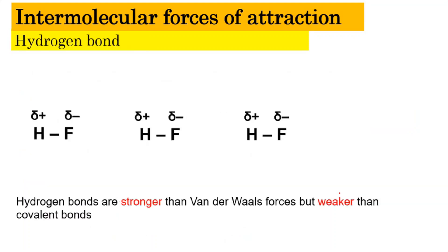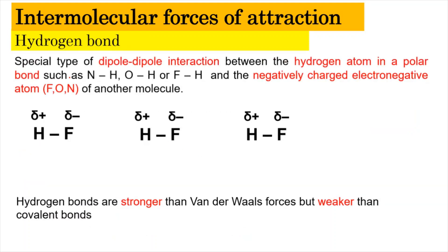Hydrogen bonding is a special type of dipole-dipole interaction that occurs when a hydrogen atom is in a polar bond — for example, N-H, O-H, or F-H. You can remember these atoms as FON: fluorine, oxygen, and nitrogen, which are negatively charged electronegative atoms.